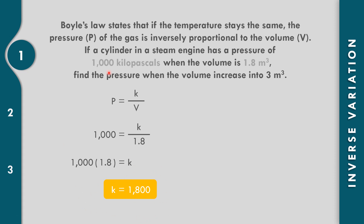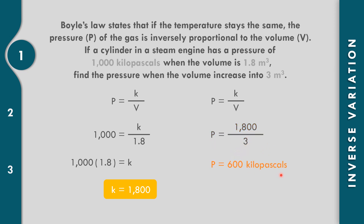Afterwards, let us continue to solve for the pressure when the volume increases to 3 cubic meters. P equals k over V, so P equals 1,800 divided by 3. If we divide, that is equal to 600. Our unit is kilopascal. So, the pressure is 600 kilopascals.